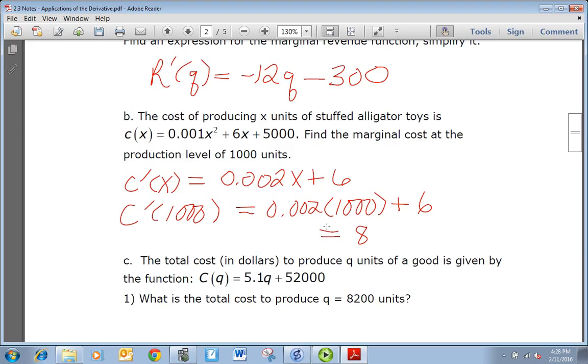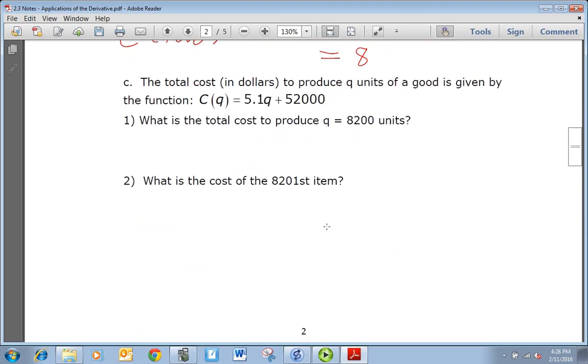Part c: The total costs in dollars to produce q units of a good is given by the function C(q) = 5.1q + 52,000. What is the total cost to produce q = 8200 units? That's just a matter of plugging in 8200 into the function. It's not asking for marginal, it's asking for total, and that total cost function is what's given. So 5.1 times 8200 plus 52,000, and if we do our arithmetic correctly there, we should get 93,820.